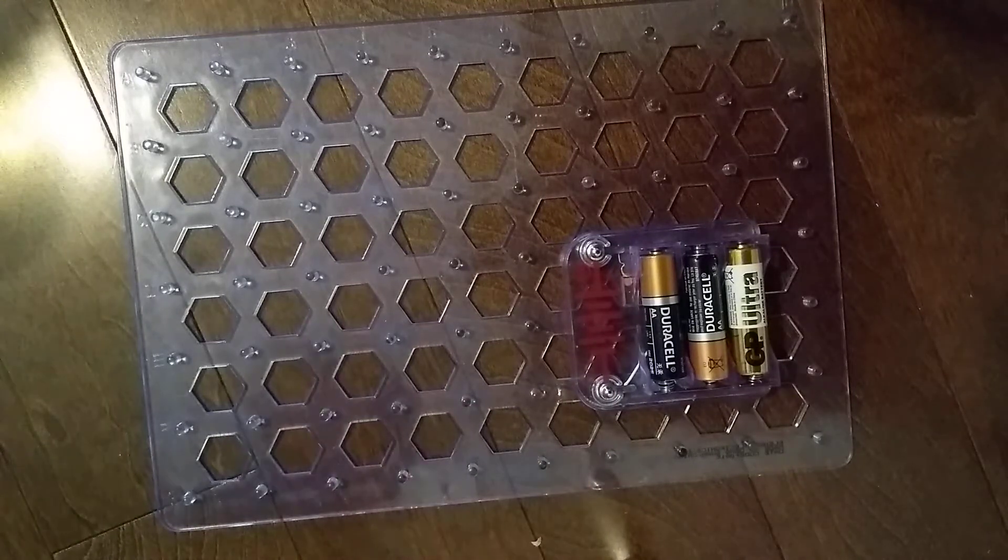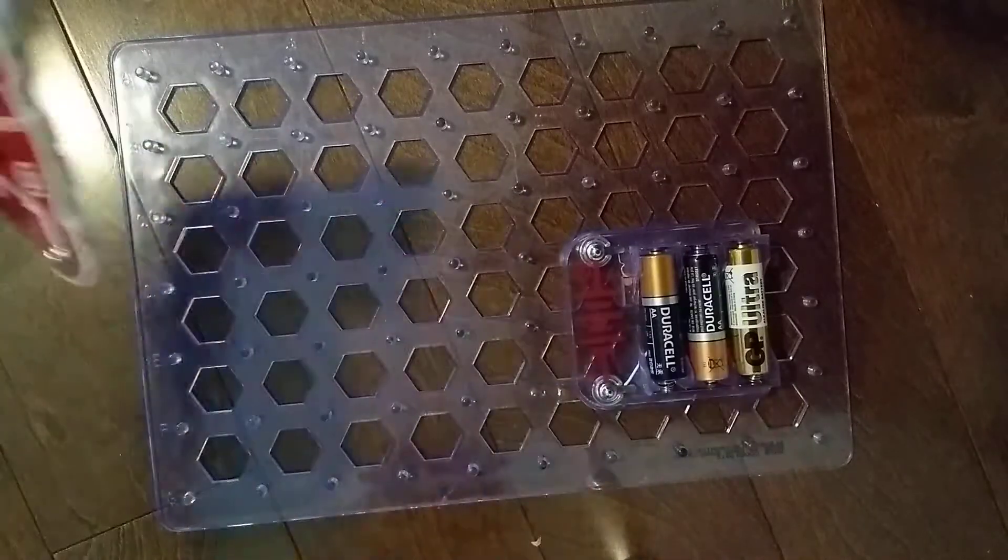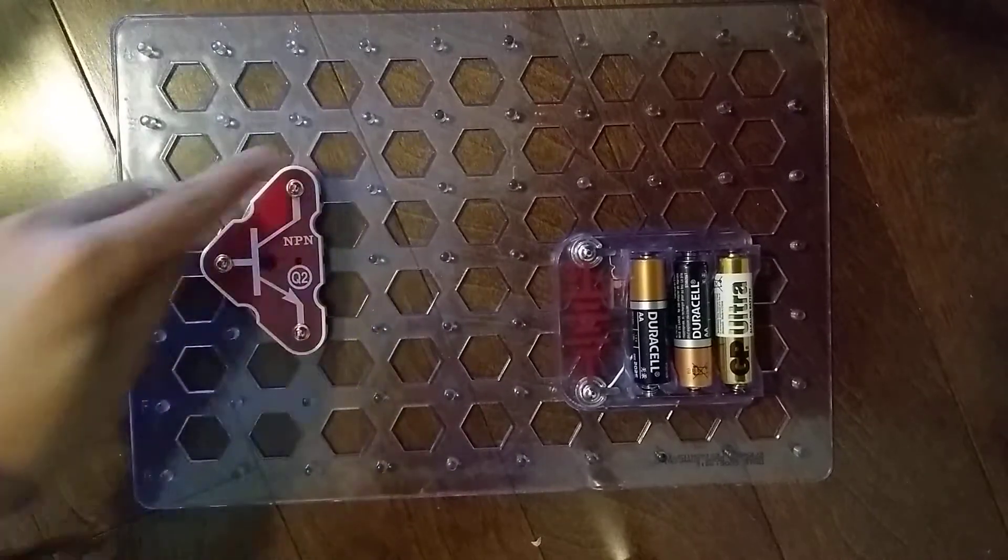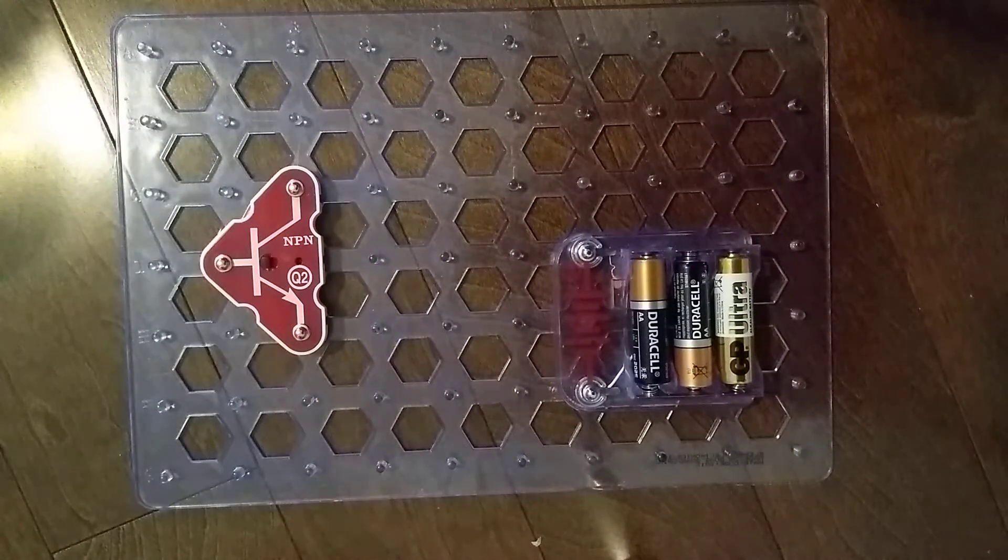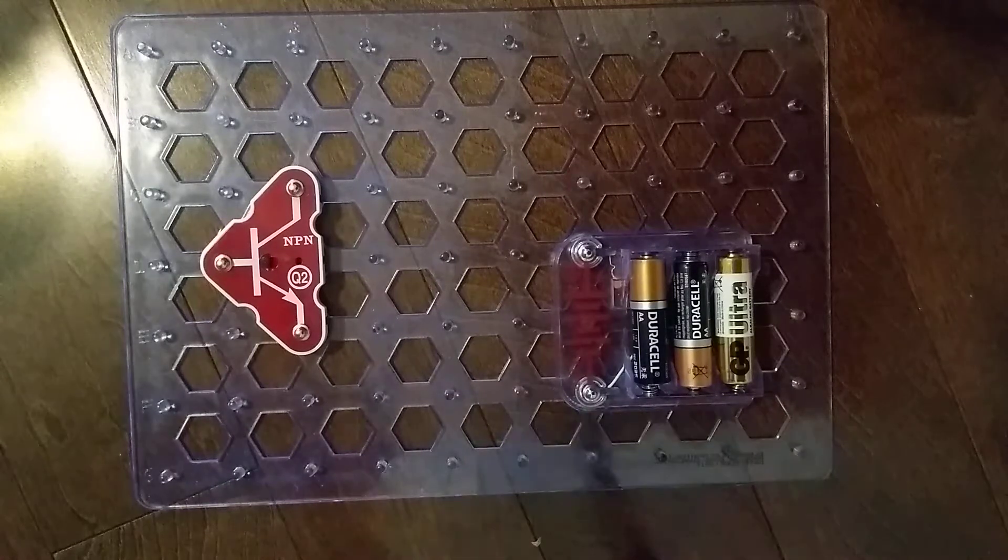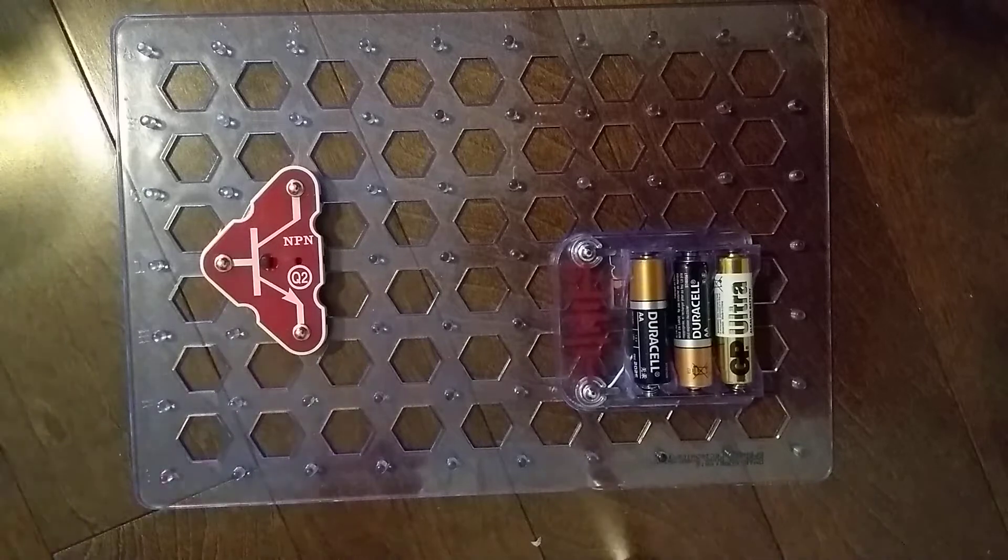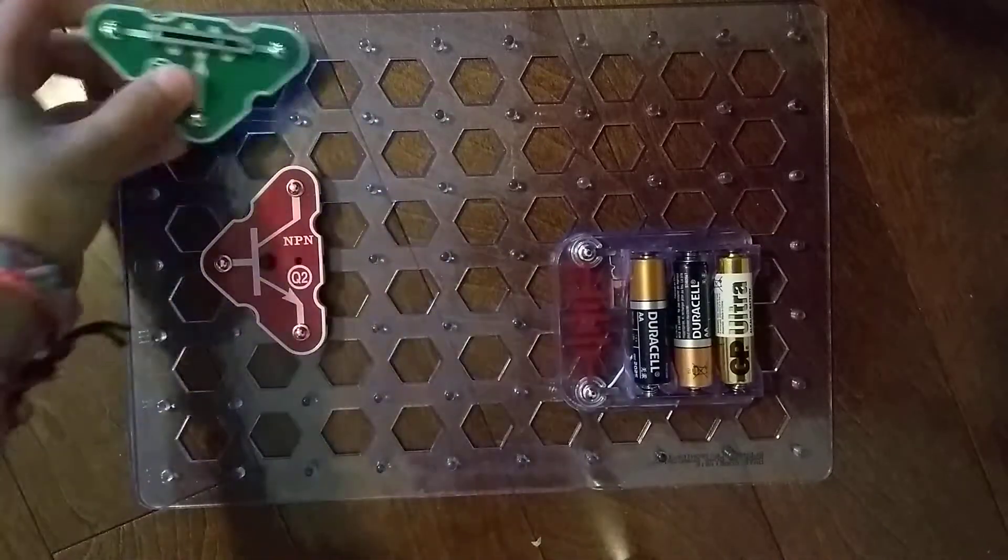We need the Q2 NPN transistor. We're going to place that right here at 3D. Okay. Next, we need the RV adjustable resistor. Let's get that. There it is. RV adjustable resistor right here.